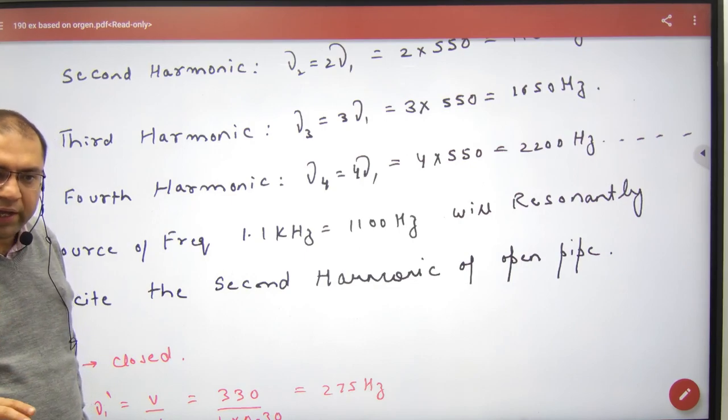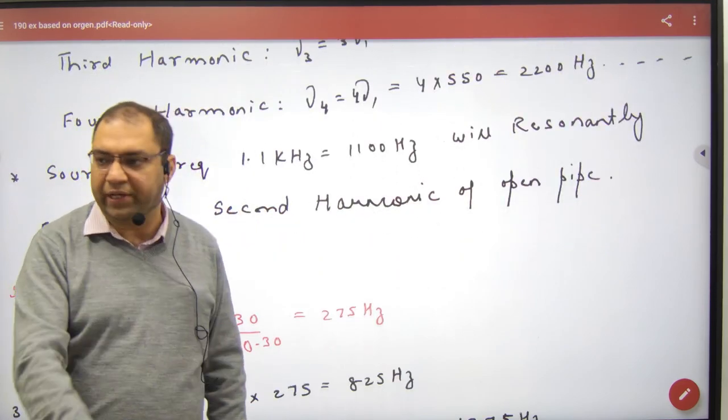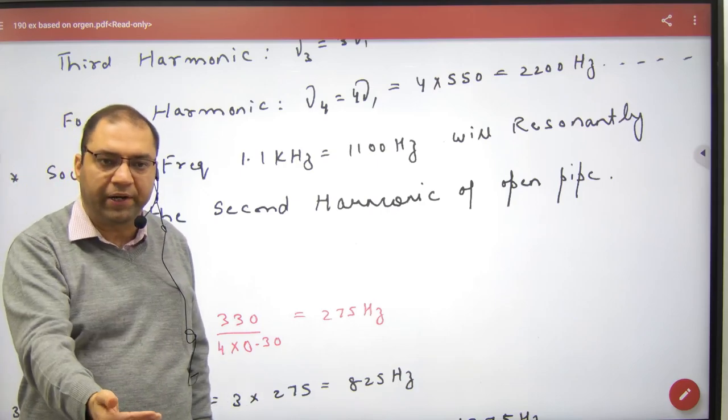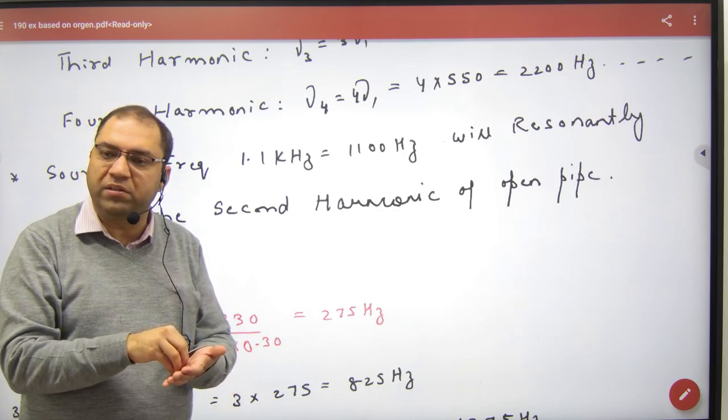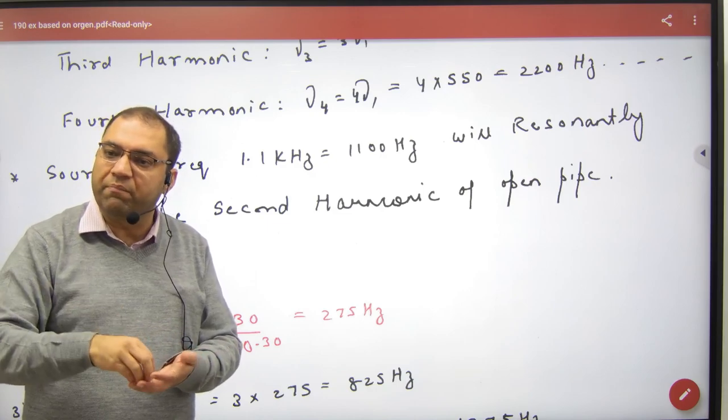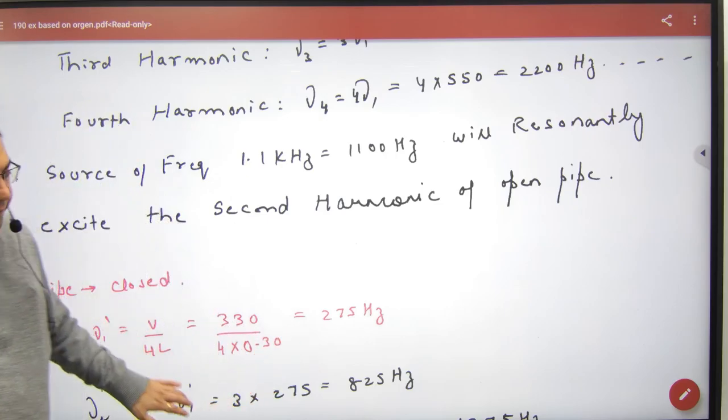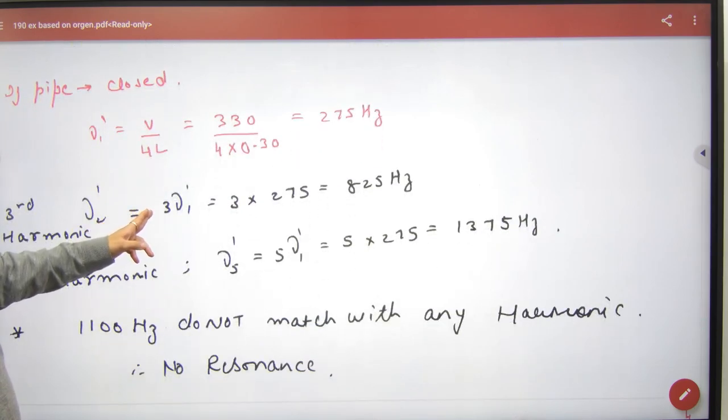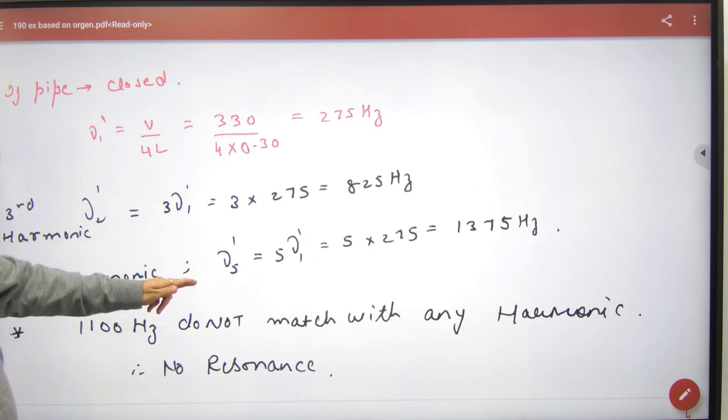No case matches, so you have to check 2-3 frequencies. If any student asks which case will match, it will not match. Third pipe closed at one end, first frequency nu_1, next 3*nu_1, next 5*nu_1. It will not match.